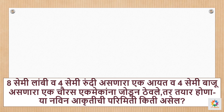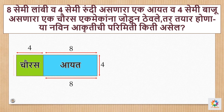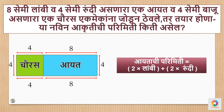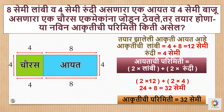प्रश्न: 12 सेंटिमीटर लांबी व 4 सेंटिमीटर उंची असणार एक आयत आणि 4 सेंटिमीटर बाजू असलेला एक चौरस - एकमेकांना जोडून ठेवले तर तयार होणाऱ्या नवीन आकृतीची परिमिती किती? आयताची परिमिती बरोबर 2 गेले लांबी अधिक 2 गेले रुंदी - 2 गेले 12 अधिक 2 गेले 4 म्हणजे 24 अधिक 8 बरोबर 32 सेंटिमीटर.